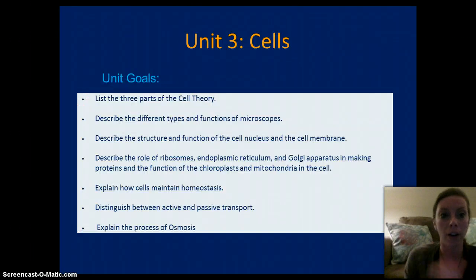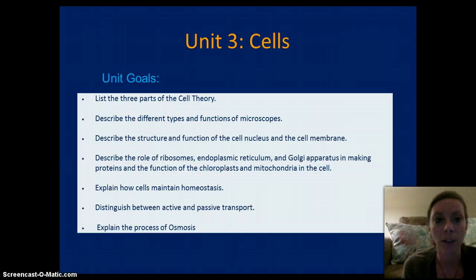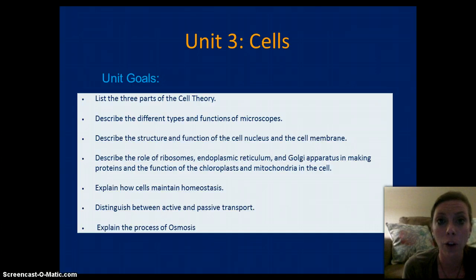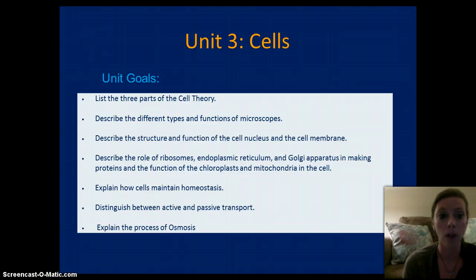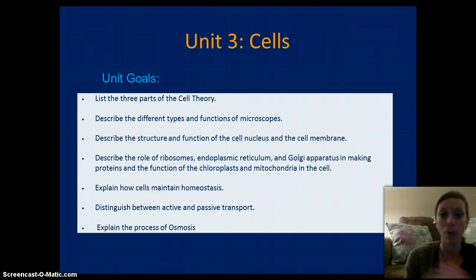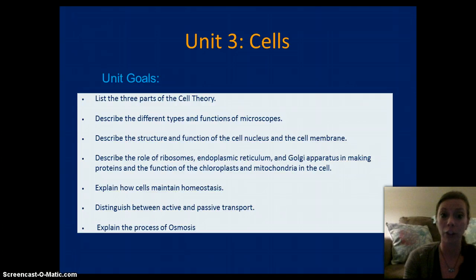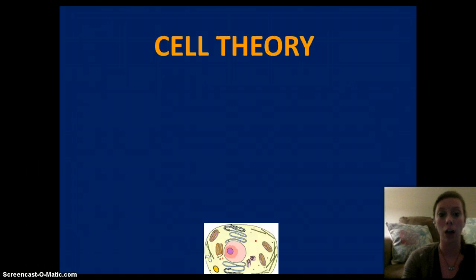So, there are your unit goals. You need to know the three parts of the cell theory. You need to understand the different types of microscopes and how they function, the structure and function of all of the basic cellular organelles. You need to understand how a cell maintains homeostasis and understand the difference between passive and active transport and osmosis.